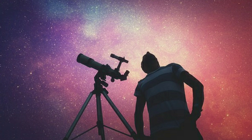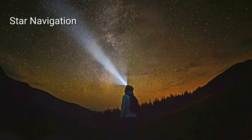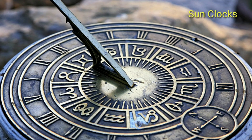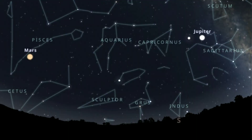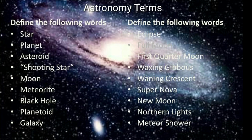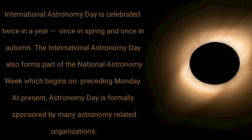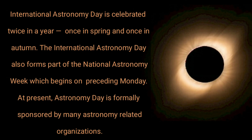No matter where you are in your learning journey, find something to do to celebrate the celestial bodies above us. Some activities include: star navigation, bird day moons, sun clocks, constellations, astronomy themes, and Greek and Roman mythology. International Astronomy Day is celebrated twice a year — once in spring and once in autumn.